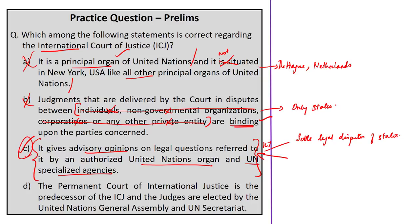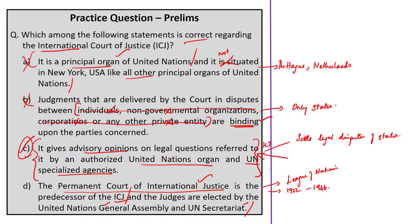Option C states that the ICJ gives advisory opinions on legal questions referred to it by authorized UN organs and UN specialized agencies. The ICJ has a two-fold role: first, to settle legal disputes between states submitted to it in accordance with international law; and second, to give advisory opinions on legal matters referred to it by duly authorized UN organs and specialized agencies. This makes option C correct. Option D states that judges are elected by the UN General Assembly and the UN Secretariat — this is wrong, as judges are elected by the UN General Assembly and the Security Council, not the Secretariat.